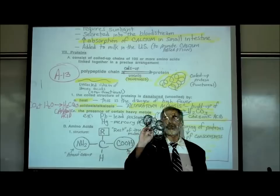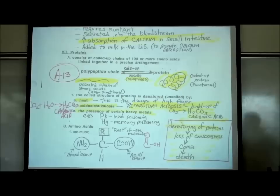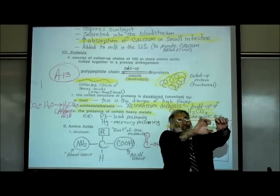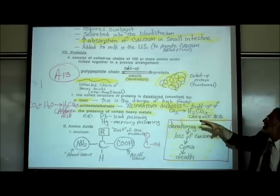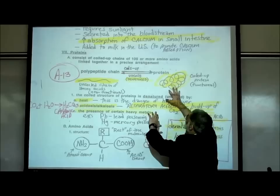A protein is a three-dimensional coiled-up chain of amino acids arranged in a precise sequence — they really do look like slinkies. The chain of amino acids itself is called a polypeptide chain, and once it takes on a three-dimensional shape, it's referred to as a protein. It's only as a protein, coiled up, that it's functional.